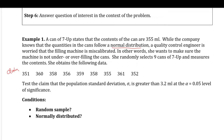Test the claim that the population standard deviation is greater than 3.2 milliliters at a 5% level of significance. The claim is that sigma is greater than 3.2 milliliters. The conditions are only two: we need a simple random sample, and there is a strict condition that the population must be normally distributed — which we do see is true here. So we can go right into step one.